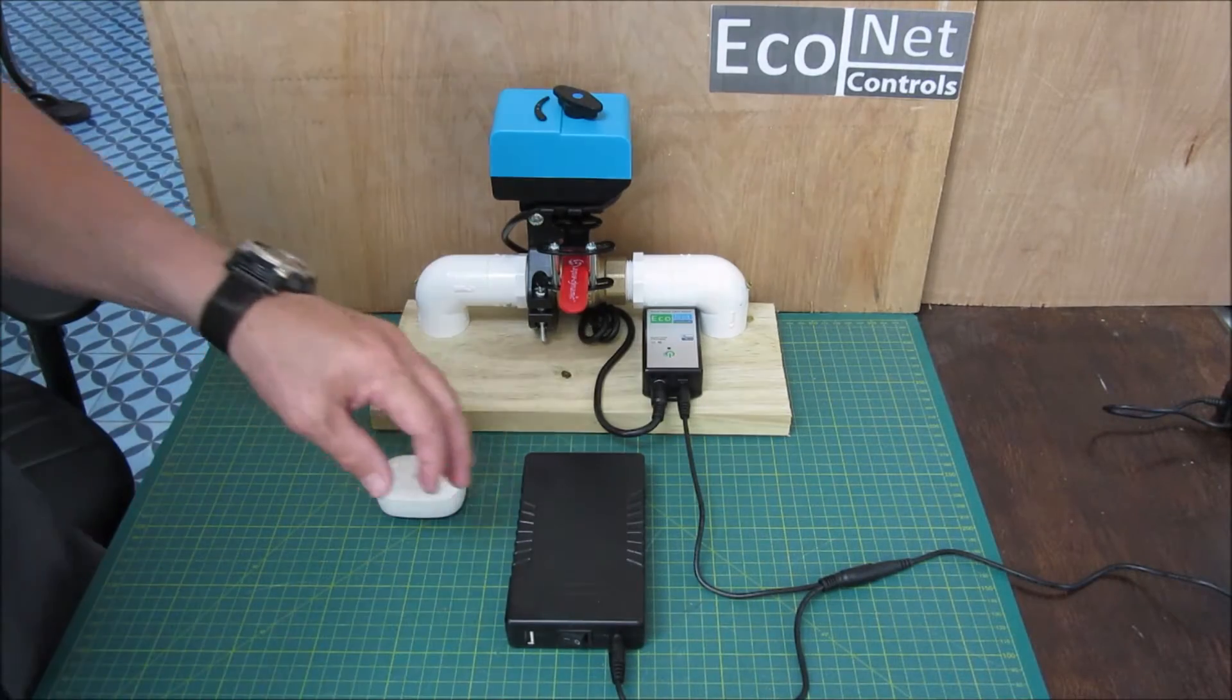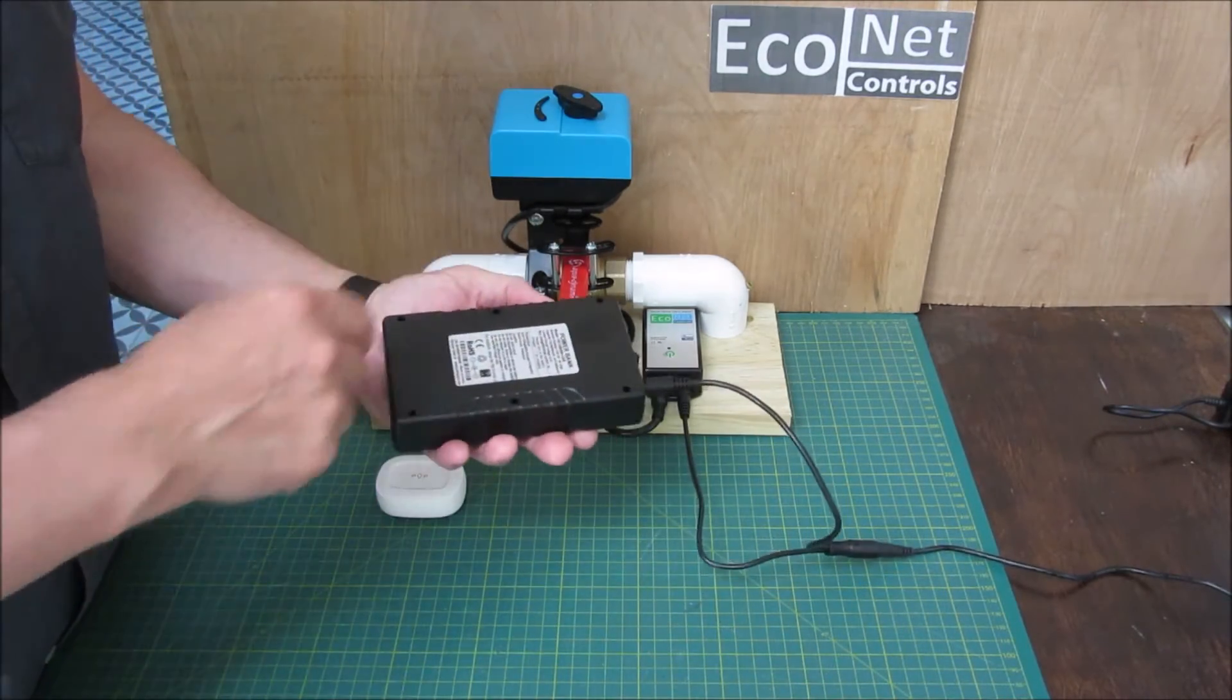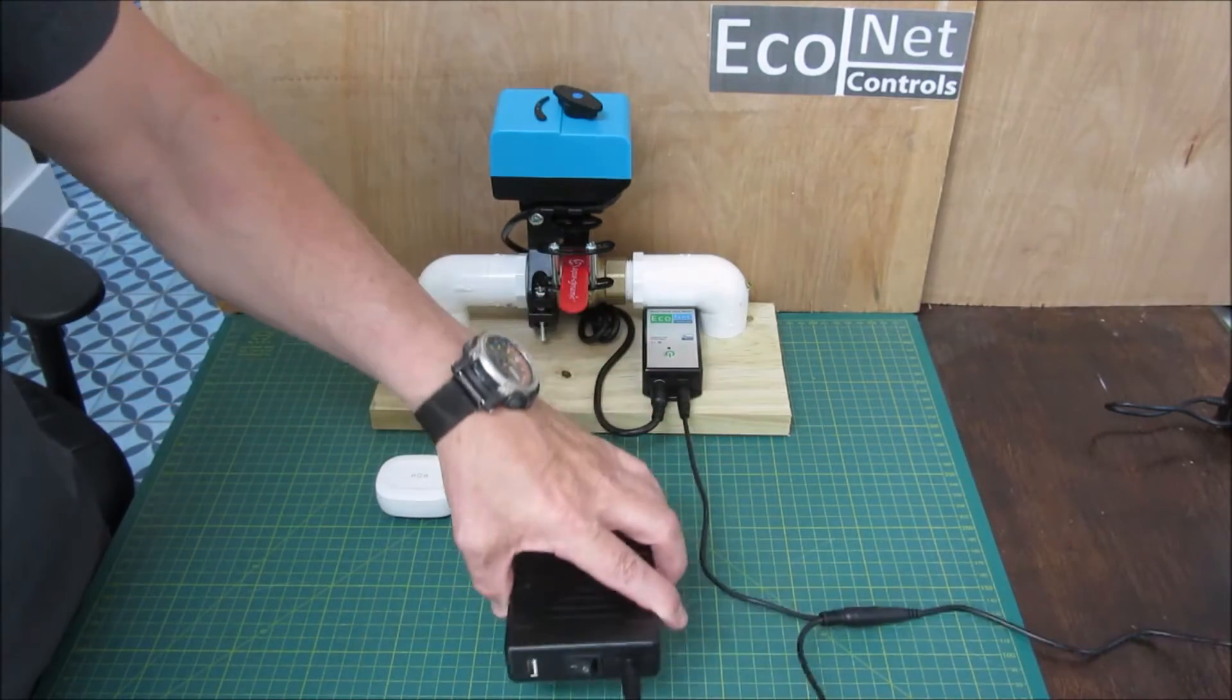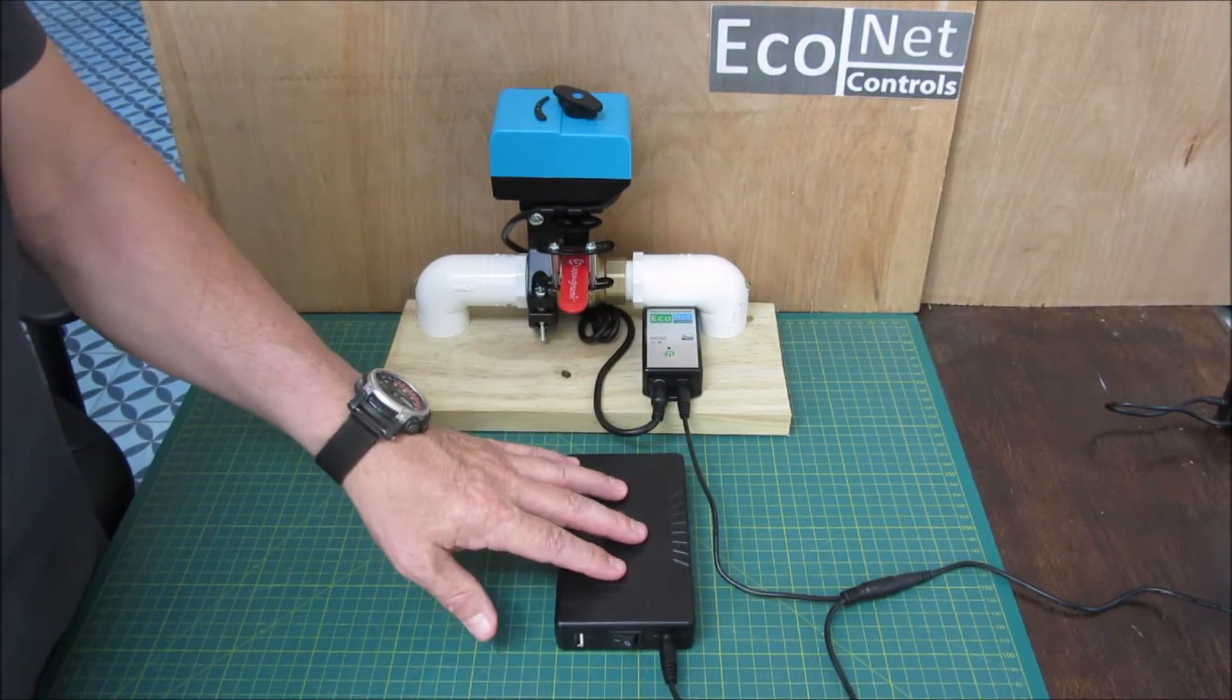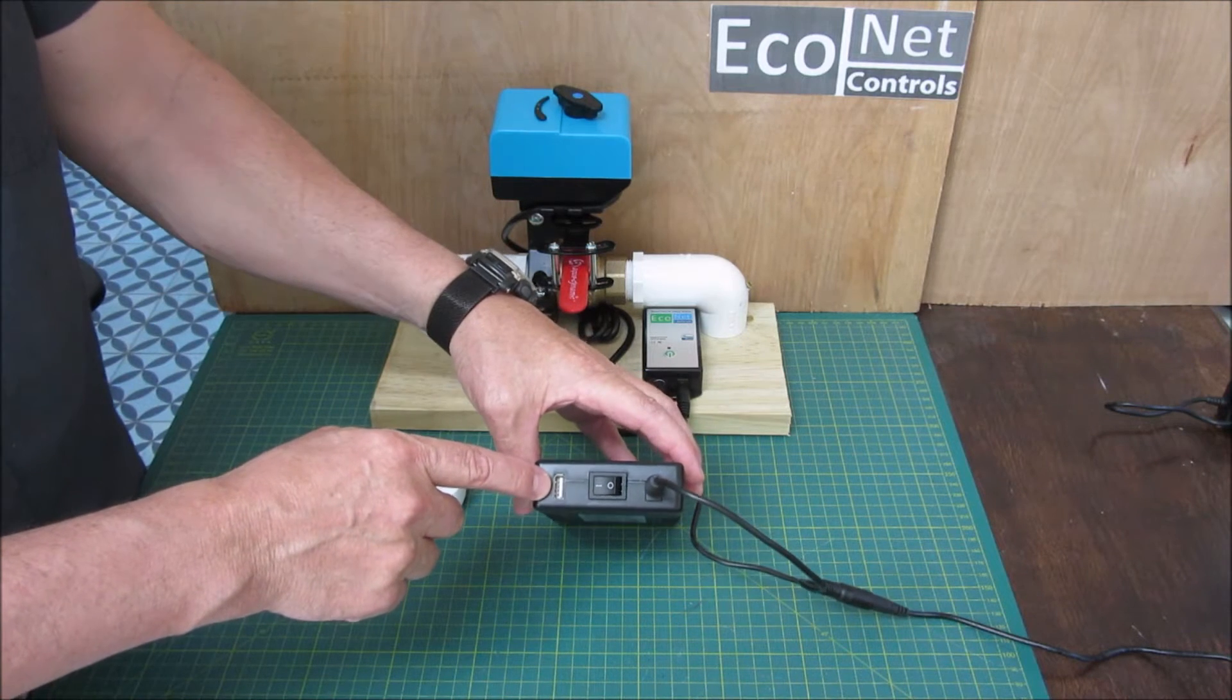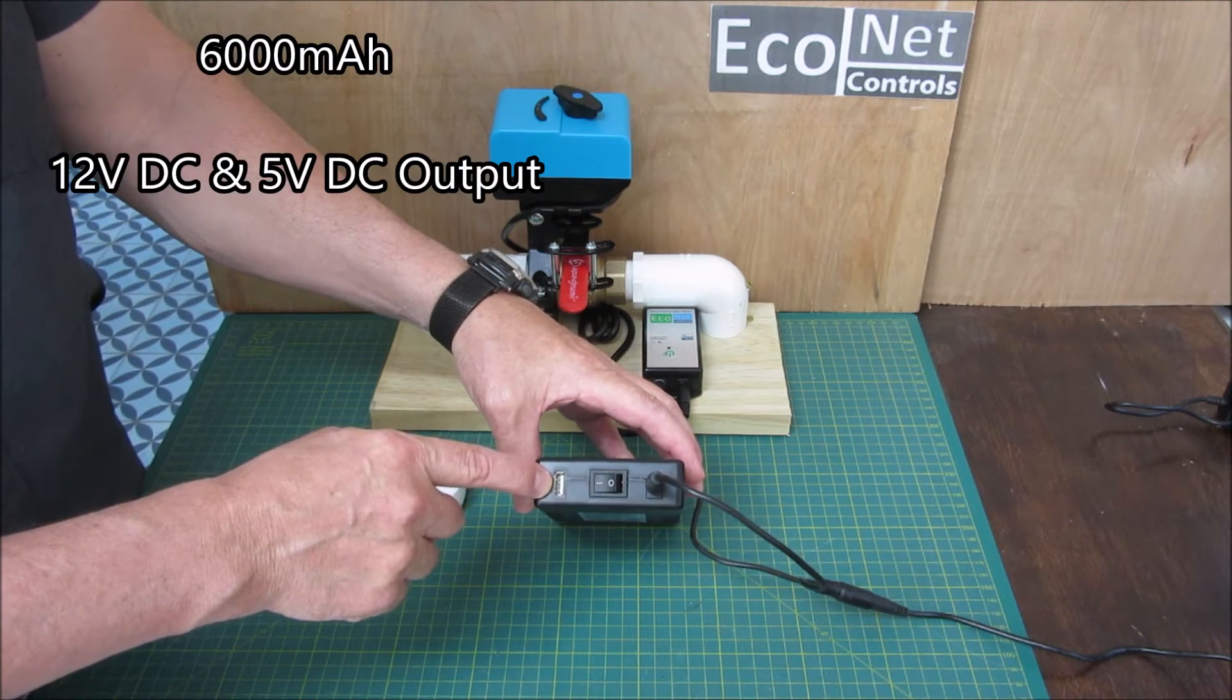I'm just going to show you how to add a battery backup to the Bulldog. So this is a 6000 mAh battery pack that has a 12 volt output. It also has a 5 volt output through a USB port.